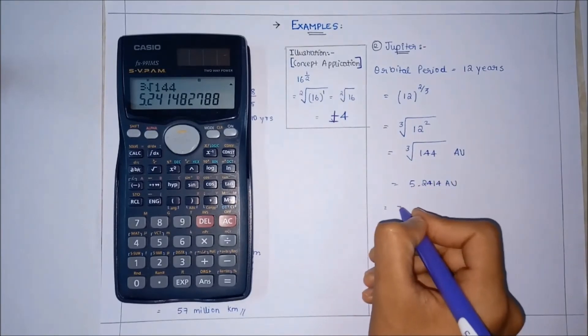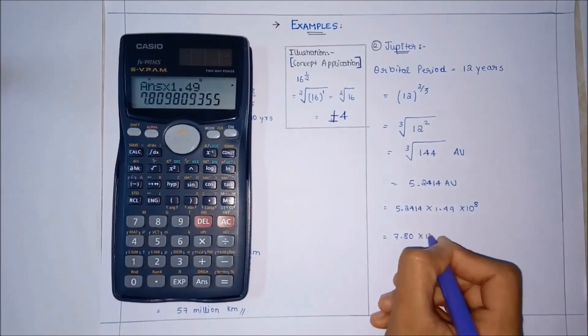Let us use a scientific calculator. Cube root of 144 gives us 5.2414 AU. And you know 1 AU is 1.49 × 10^8 kilometers. So let us multiply it. We get it as 7.8098 × 10^8 kilometers which can also be written as 780 million kilometers.